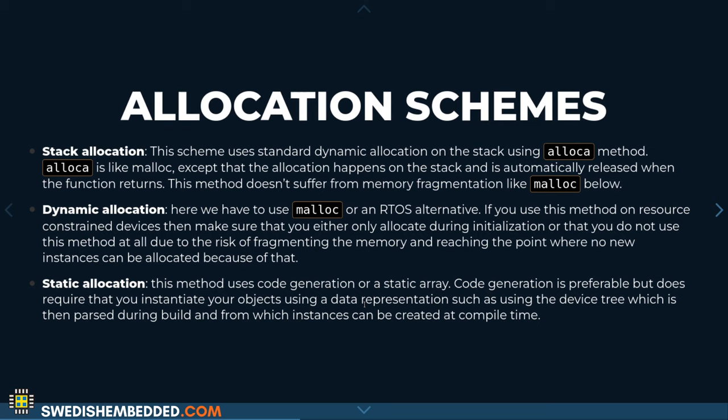To deal with the size problem, we need to define an allocation strategy. There are three main strategies. Number one is stack allocation using a special function called alloca, which allocates the data structure based on a size we pass in. We can't allocate the variable on the stack directly because we don't know its size from the header file. We implement a special function that just returns the data structure size.